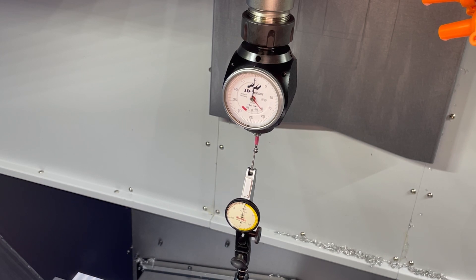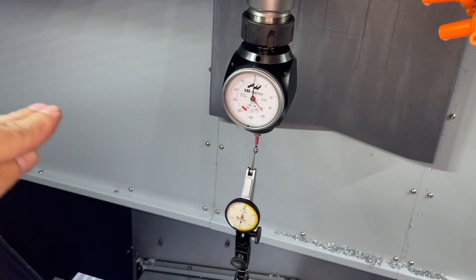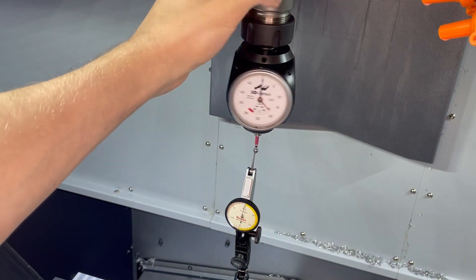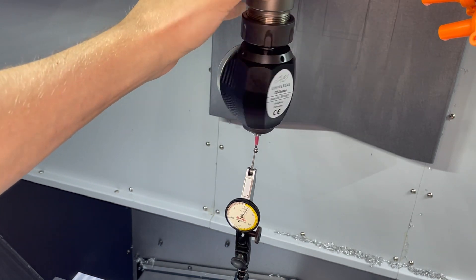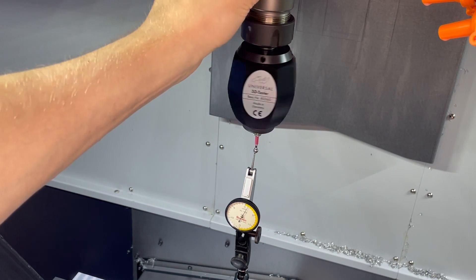Right about there. So once again we're going to zero to Y and if we did this correctly, right there is the center line of the part. So now we are centered on the ball up and down in Z and we are centered on the ball left to right in X.